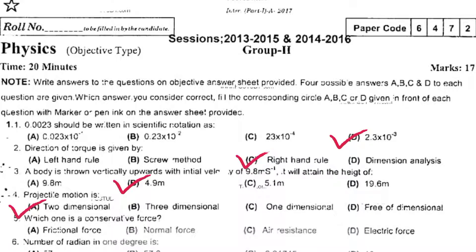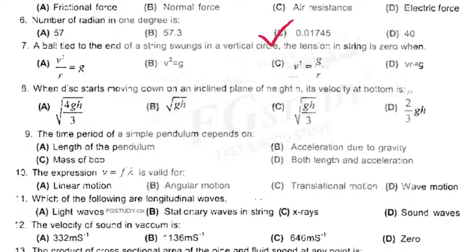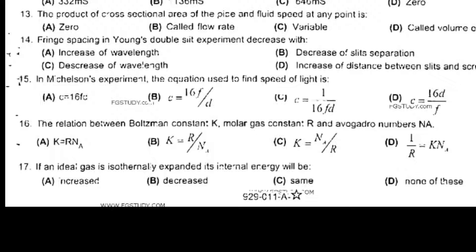Which one is a conservative force? Electric force. Number of radians in one degree is 0.01745. A ball tied to the end of a string swinging in a vertical circle, the tension of the string is zero when v²/r = g. When they start moving down on incline plane of height h, its velocity at bottom is √(4gh/3). The time period of a simple pendulum depends on both length and acceleration. The expression v = fλ is valid for wave motion. Which of the following are longitudinal waves? Sound waves. The velocity of sound in vacuum is zero.